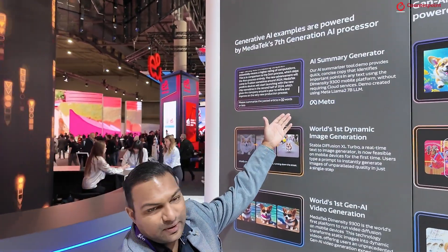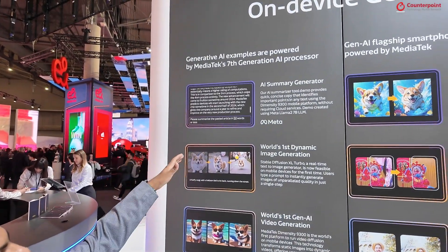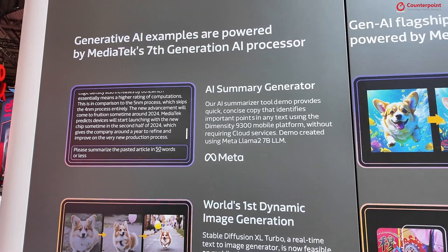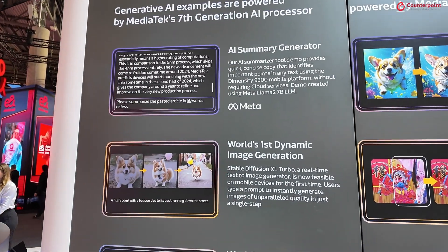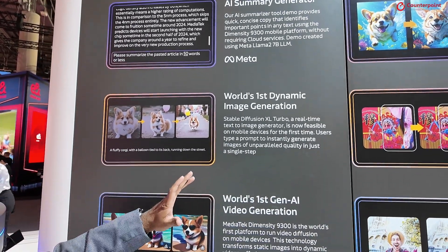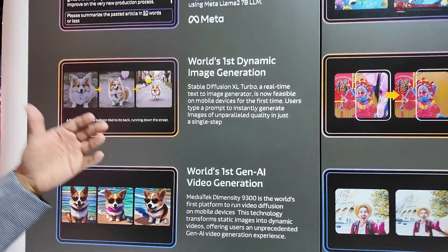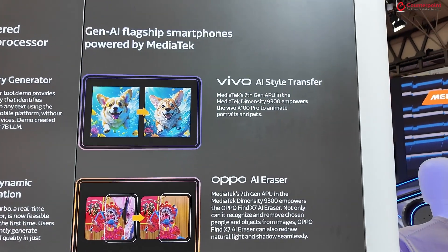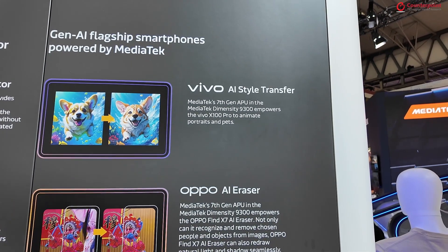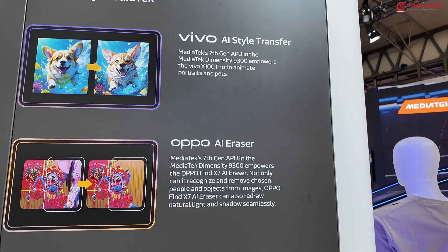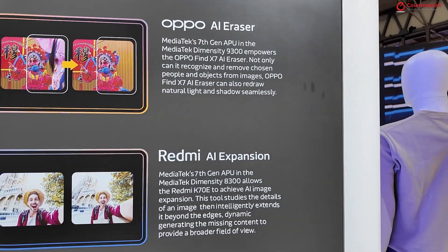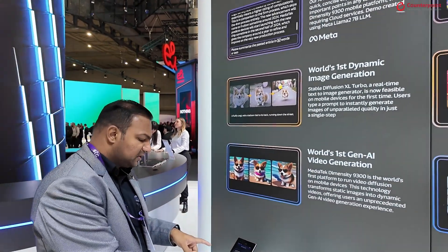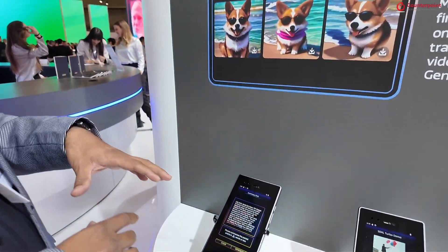We are here at MWC in the MediaTek booth, and there are some cool generative AI use cases and demos right here. We have the AI summary generator powered by Meta's Llama 2 7 billion LLM model, the dynamic image generation using stable diffusion model, and an AI video generation tool. There are also some MediaTek partner experiences, like Vivo AI style transfer, Oppo AI Eraser, and Redmi AI expansion. Let's start with the first demo, which is the AI summary generator.